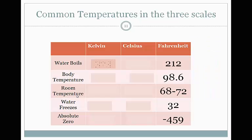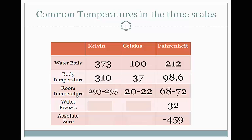So let's do comparisons of temperatures. Water boils in the Kelvin system at 373. That's 100 plus 273. In the Celsius system, it's 110. In the Fahrenheit system, it's 212. Body temperature in the Kelvin system is 310. In the Celsius system, it's 37. In the Fahrenheit system, it's 98.6. Room temperature is 293 to 295. In Celsius, it's 20 to 22. In the Fahrenheit system, normal room temperature is 68 to 72.